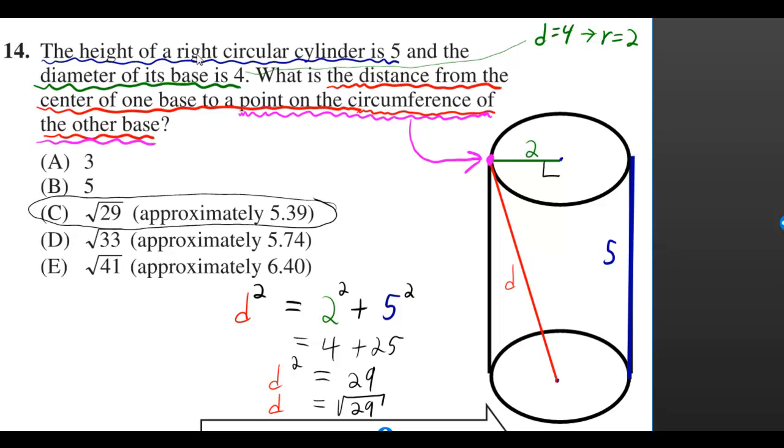By telling us that the height was 5, that means we can label this section over here 5. Or we can move it so that it's joining the two centers of the two bases, the bases being the two circles. They told us that the diameter of the base is 4, which means that the radius is 2, which I labeled in green.